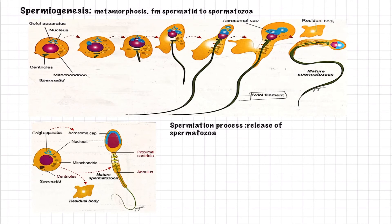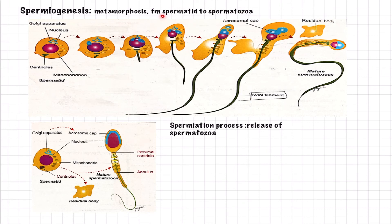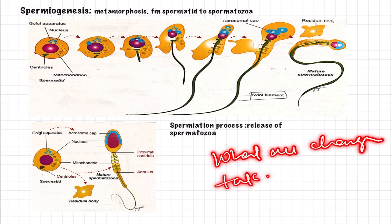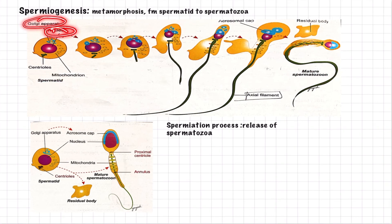Now let us learn the spermiogenesis process in depth. In spermiogenesis, which is a part of spermatogenesis, there is no cell division — neither mitosis nor meiosis. Only metamorphosis is occurring, in which spermatids are transformed by changes in form into spermatozoa. As you can see clearly, the spermatid is transformed into a mature spermatozoon. The Golgi apparatus, nucleus, centrioles, and mitochondria are all changed into different forms. The Golgi apparatus is changed into the acrosomal cap, covering two-thirds of the nucleus anteriorly.